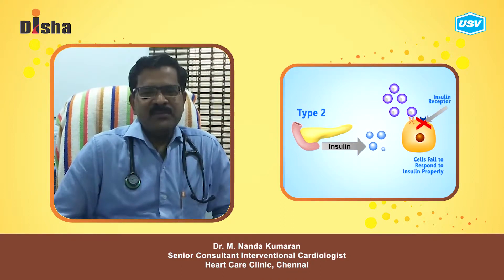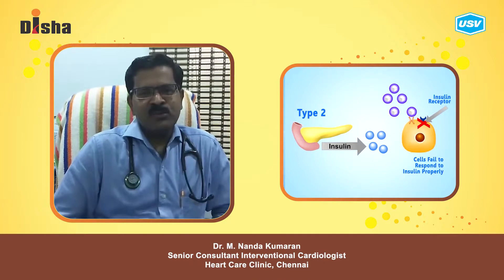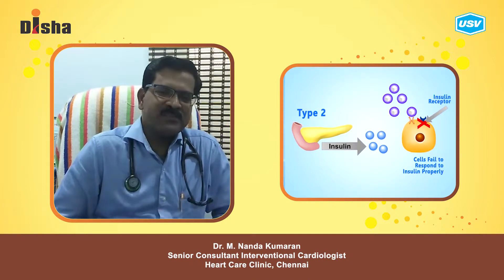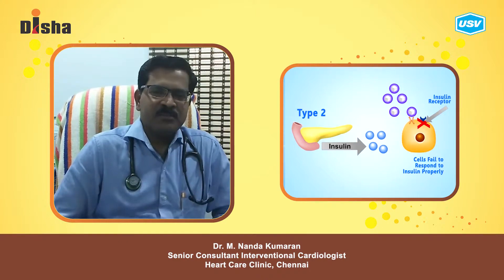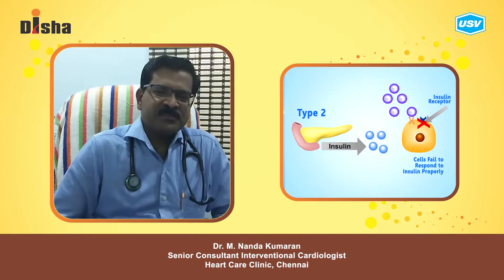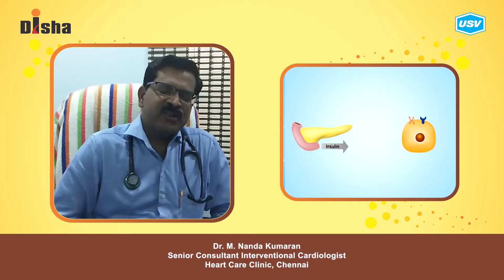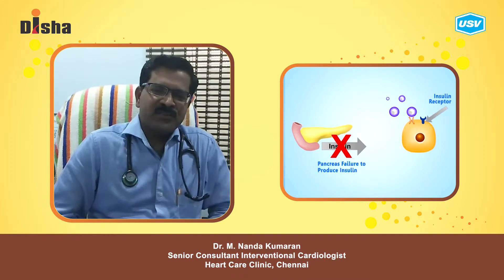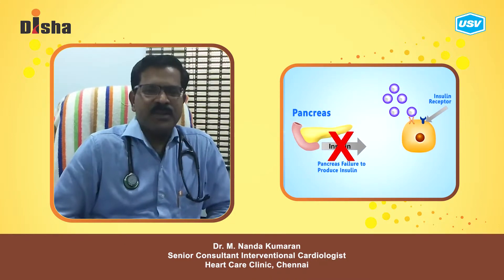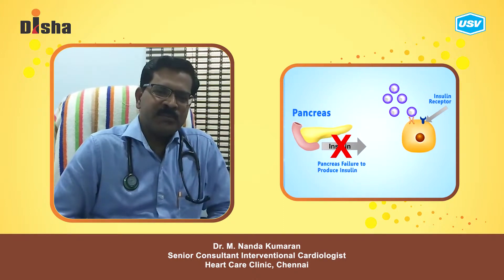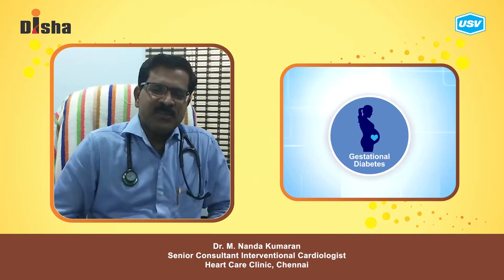In Type 2, sometimes the insulin level is abundant but the body may not be able to utilize the insulin present in the blood, so there is a relative insulin deficiency which again causes increased blood sugar. Insulin is an important hormone which helps for the utilization of sugar in the body.